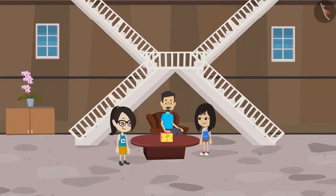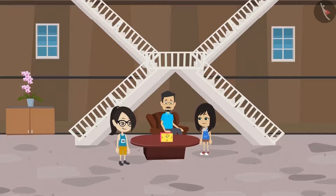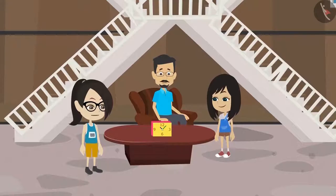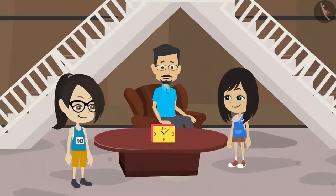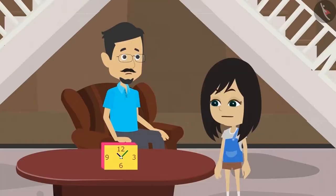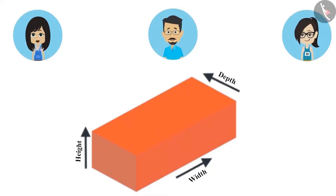We live in a 3D world. All the objects around us are 3D. What is the meaning of 3D? The meaning of 3D — I am still not clear uncle. This means that every object has three dimensions: width, height, and depth. Yes, we had learned this while learning about bricks. To measure bricks we use three dimensions.